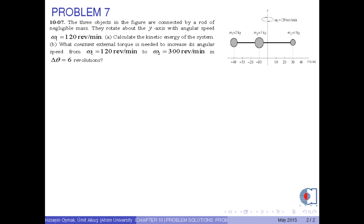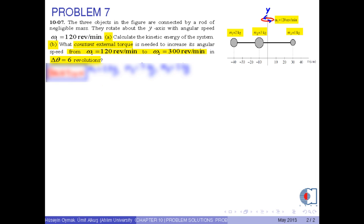The three objects in the figure are connected by a rod of negligible mass. They rotate about the y-axis with angular speed 120 rpm. Part A: Calculate the kinetic energy of the system. Part B: What constant external torque is needed to increase its angular speed from omega 1, which is 120 rpm, to omega 2, which is 300 rpm, in 6 revolutions?